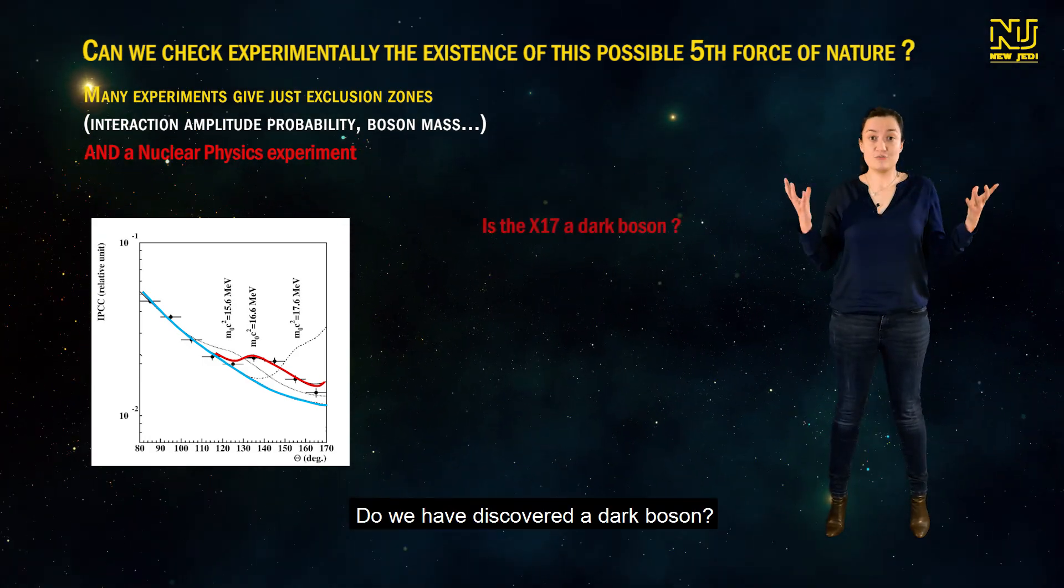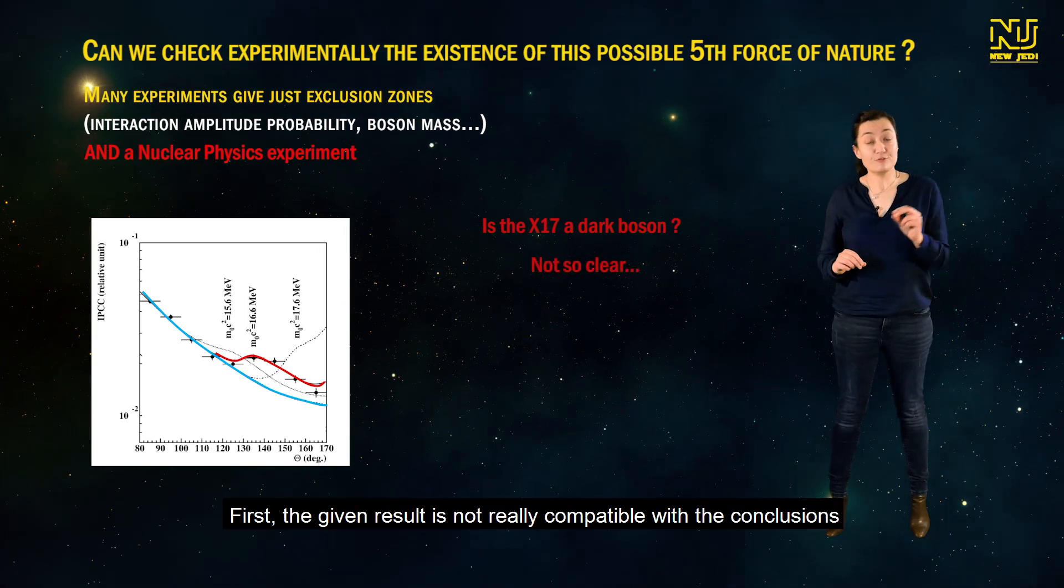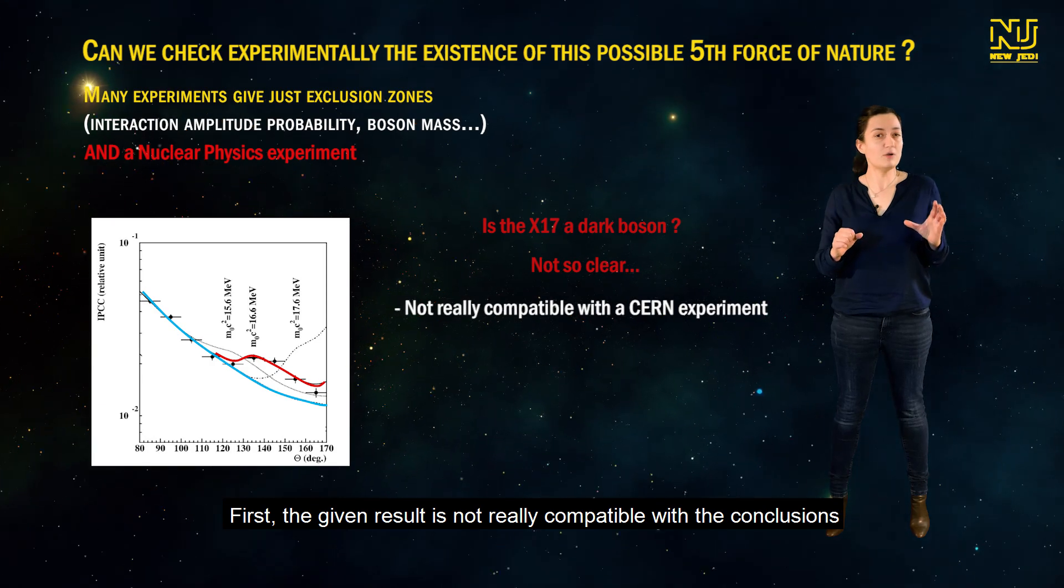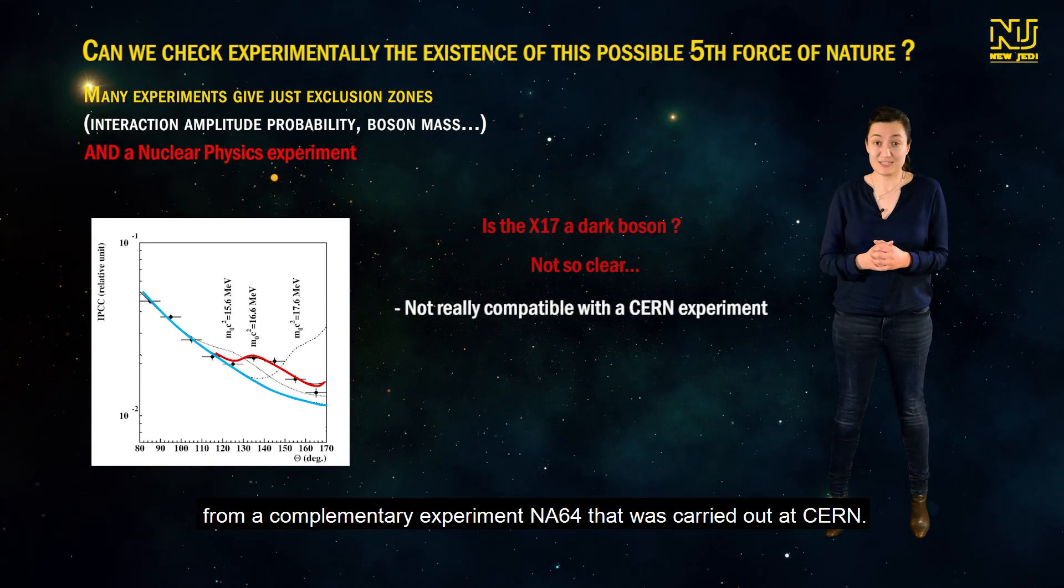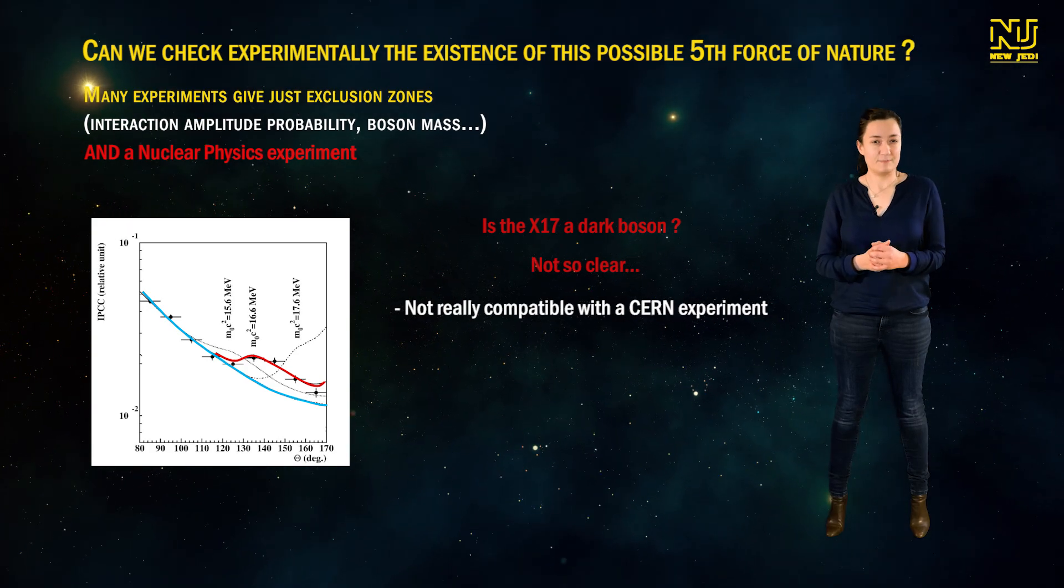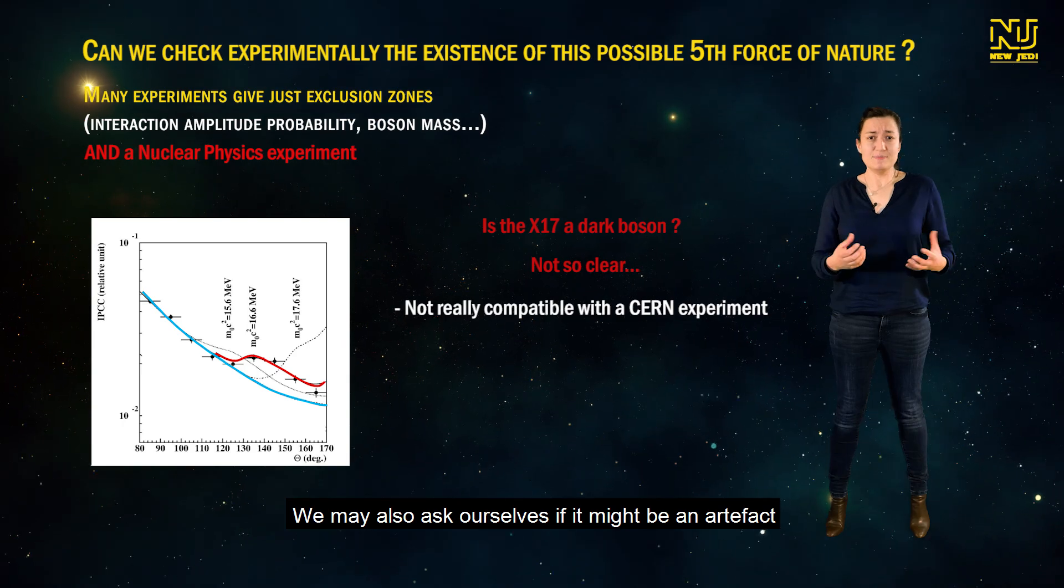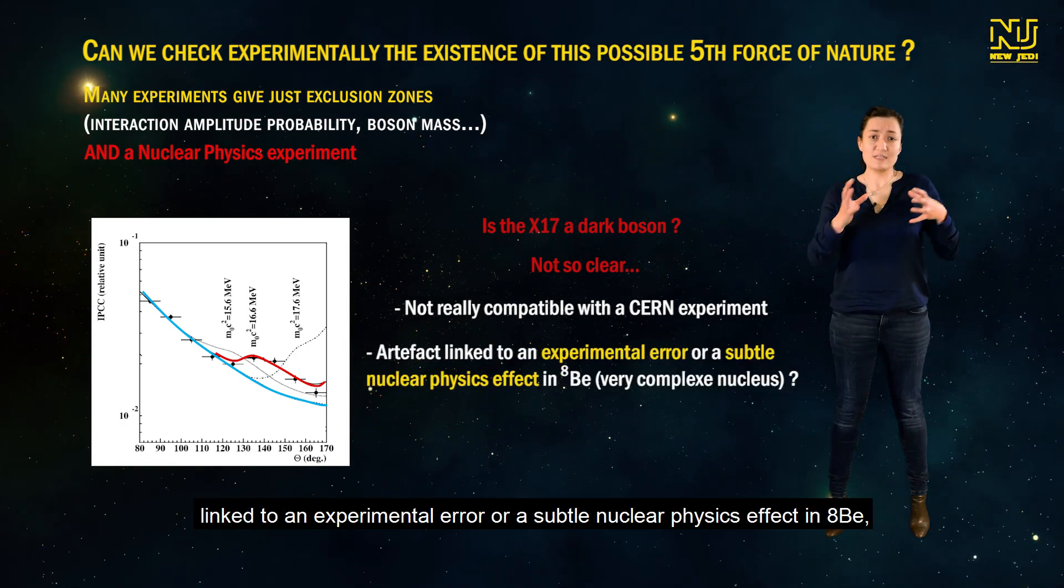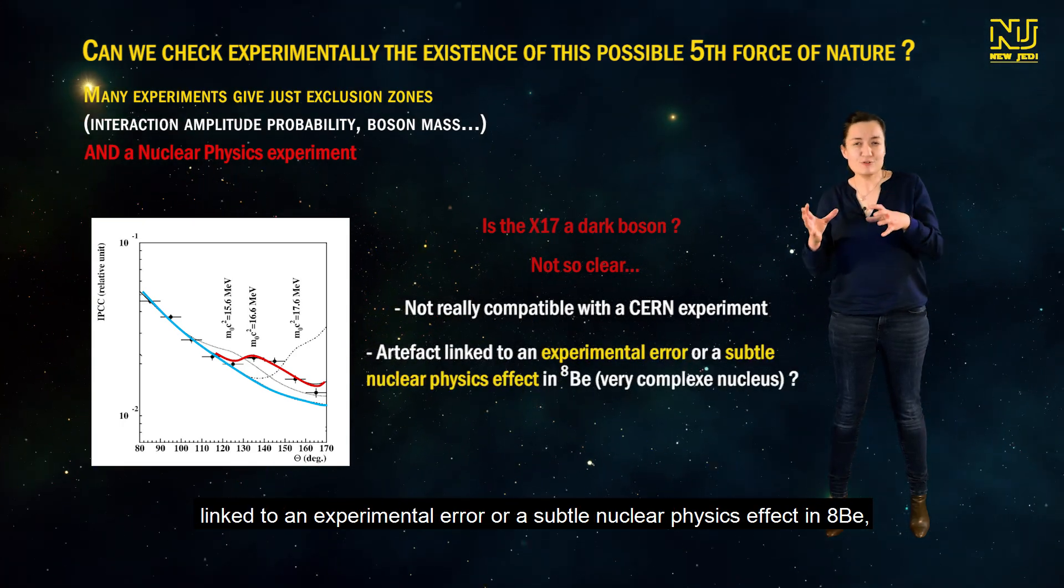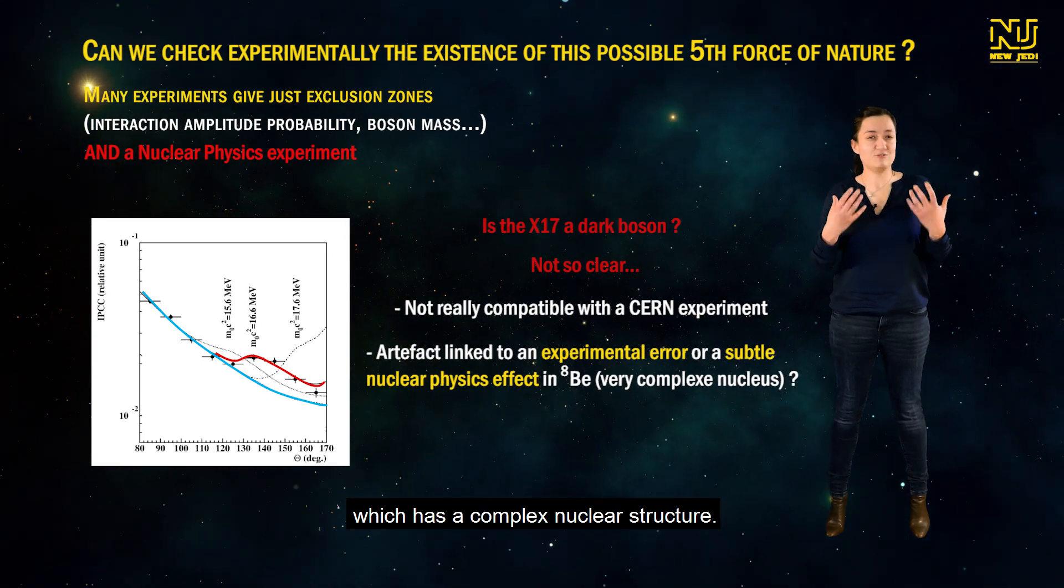Do we have discovered a dark boson? Well, it's not so clear. First, the given result is not really compatible with the conclusion from a complementary experiment, NA64, that was carried out at CERN. We may also ask ourselves if it might be an artifact linked to an experimental error or subtle nuclear physics effect in beryllium-8, which has a complex nuclear structure.